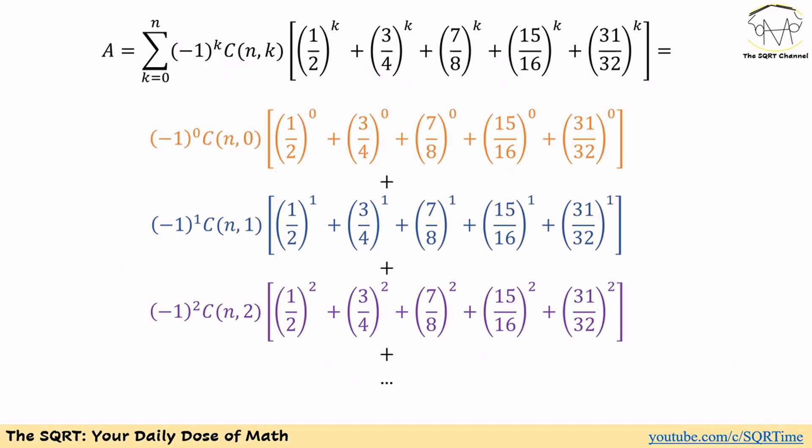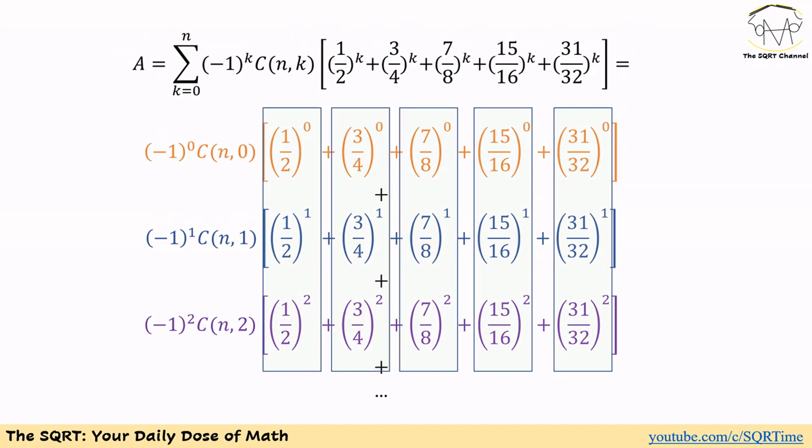To solve this problem, let's start with expanding inside the Sigma to see what we are dealing with. If we use k equals 0, you see the expression shown in brown. If we use k equals 1, we get the expression shown in blue, and for k equals 2 we get the expression in purple. By now you should see the pattern.